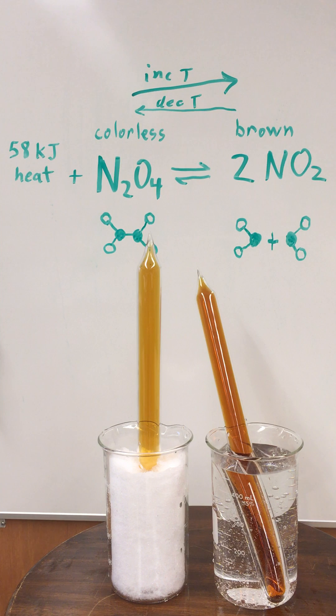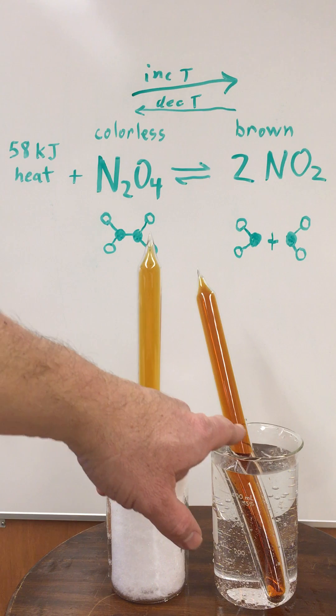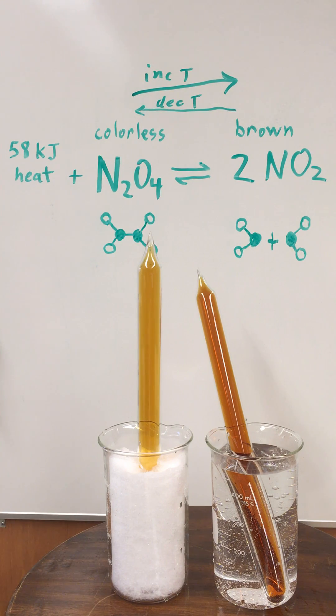And you can see that these tubes, even though I've switched their positions, are sort of reaching a new equilibrium so that again the more brown tube is in the warm water and the less brown tube is in the snow.